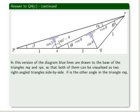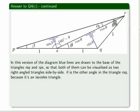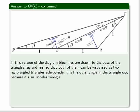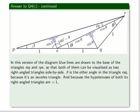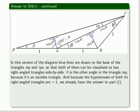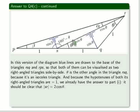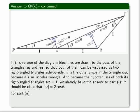Theta is the other angle in the triangle RSQ because it's an isosceles triangle. So that's also theta. And because the hypotenuses of both its right-angled triangles are 1, we already have the answer to part 1. It should be clear that SR is equal to twice cosine theta.